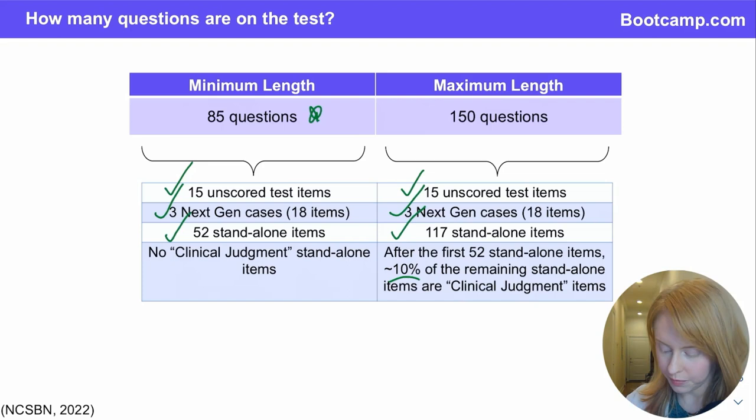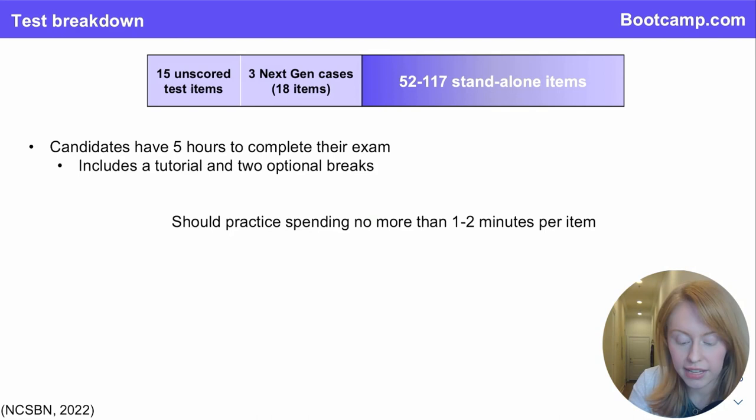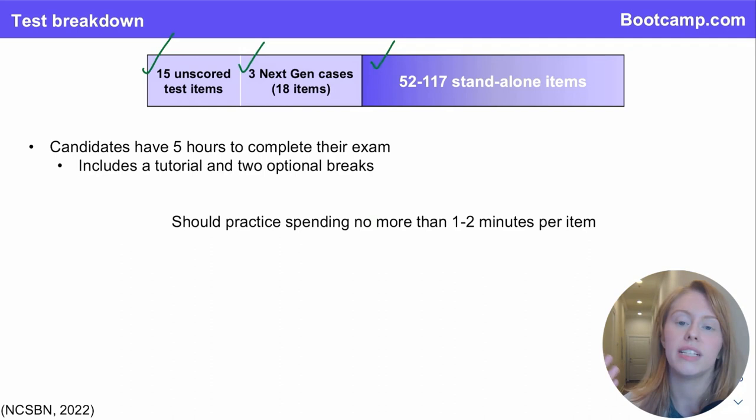So just a recap of the test breakdown. Every candidate, no matter how long their exam is, answers 15 unscored test items, three next-gen cases, and then between 52 and 117 standalone items, where if you have to answer more than 52, then 10% of the remainder are specialty clinical judgment items.